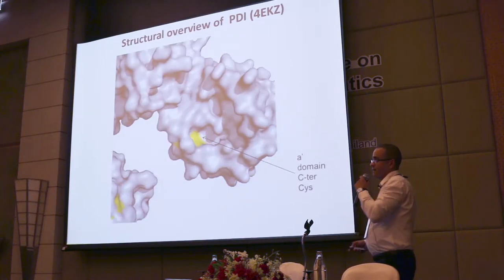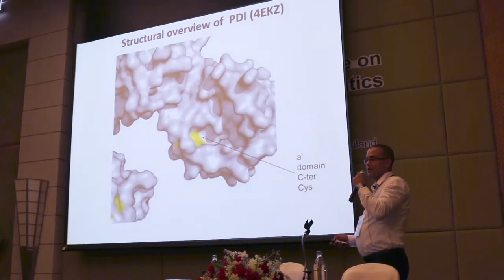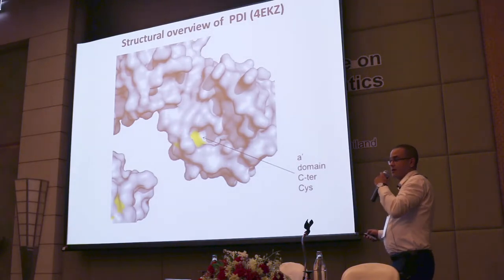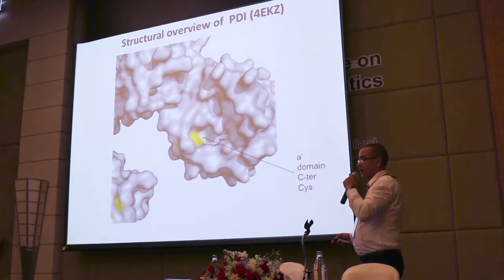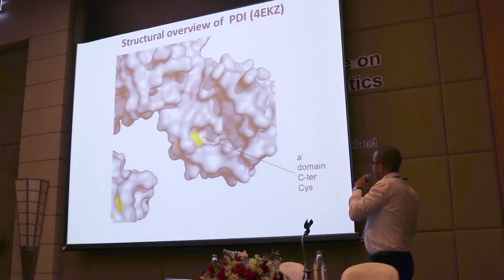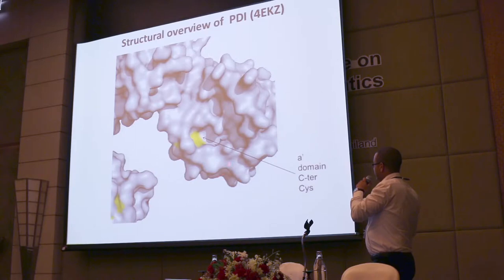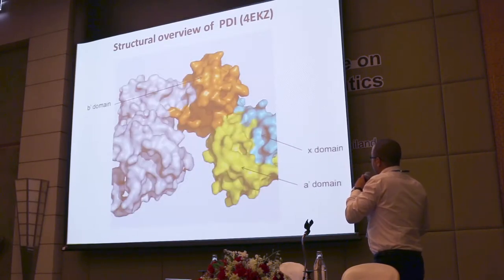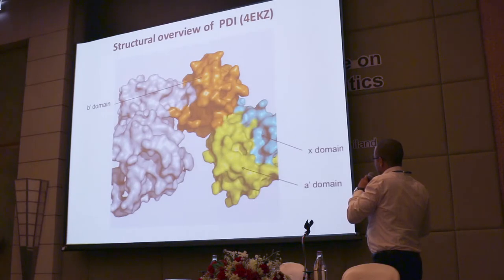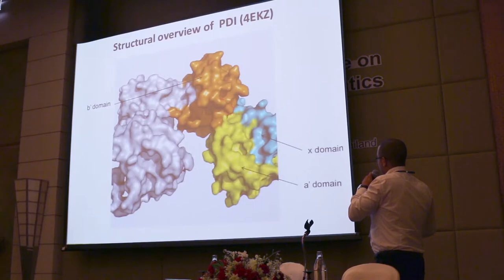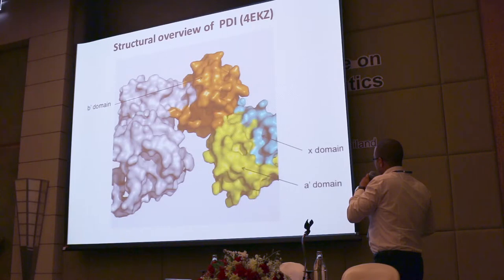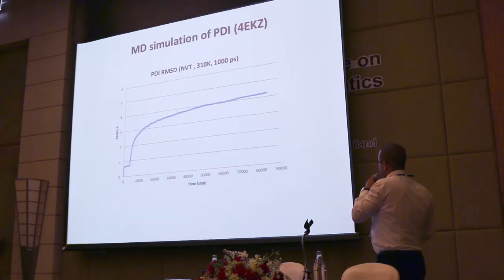The A and A' domains have two major pockets suspected to hold the substrate and contribute to enzyme activity. All studies targeting this protein have been targeting the cysteines present in these pockets, and the major compounds identified make interactions with residues in the active site. I would also like to emphasize the B' domain, which in conjunction with the A domain and the X domain constitutes part of the U-shape — I will show its importance later.